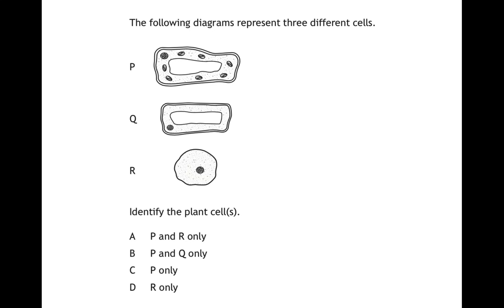Hopefully you should have realised that the correct answer is B, P and Q only. This is because by looking at the cells, P and Q both have a cell wall, a cell membrane, and a vacuole, whereas R only has a cell membrane, so it cannot possibly be a plant cell. The key thing to look for is the vacuole. Sometimes people look at P and think those must be chloroplasts around them, so Q is not a plant cell, but if it has a vacuole, it is a plant cell.